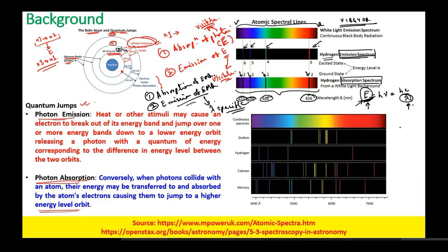There is another spectrum where you have a continuous spectrum, then spectral lines for sodium, hydrogen, calcium, and mercury. For each of these atoms, if you compare the spectral lines, they have different types of patterns.